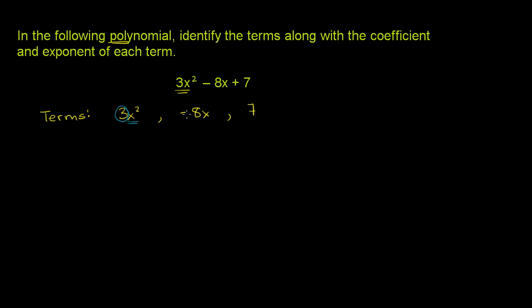On the second term, we have negative 8 multiplying x. And we want to be clear, the coefficient isn't just 8, it's negative 8. It's negative 8 that's multiplying x. So that's the coefficient right over here.